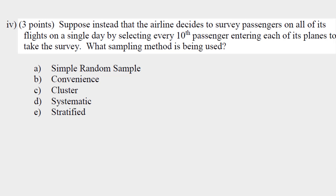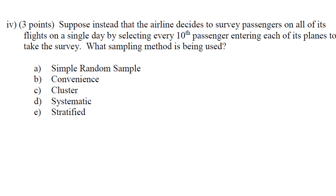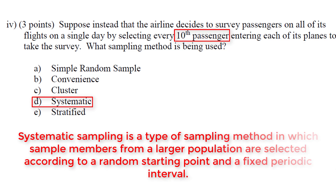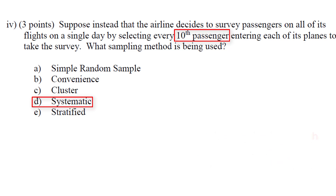Finally, suppose instead that the airline decides to survey passengers on all of its flights on a single day by selecting every 10th passenger entering each of its planes. What sampling method is being used? We're sampling every 10th passenger — this would be a systematic sample. A systematic sample chooses a random starting point and then selects every kth observation. So we can assume they started at a random point and then selected every 10th passenger.